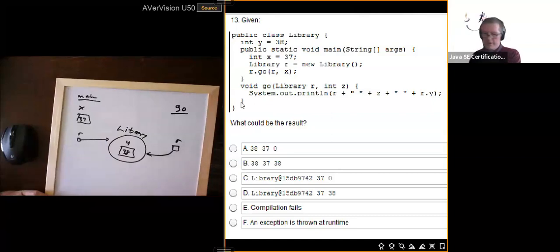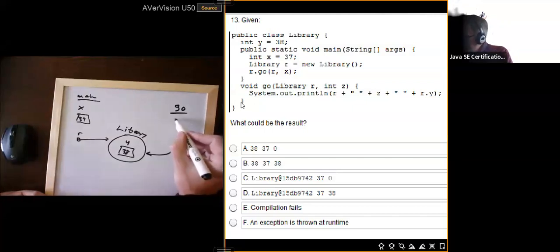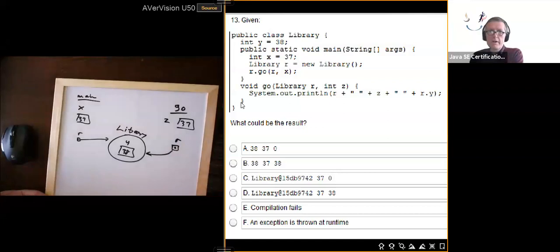It's referring to the same object because it was r that was passed down. This little bit here was copied into here, so therefore it's referring to the same object and x is copied in and it's called z. So z down here and it's 37. And then we output r plus a space plus z plus r...